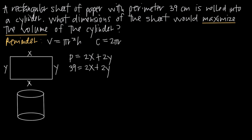If we roll this sheet into a cylinder — taking this edge y and folding it over until it meets the other edge y — we get a vertical cylinder. This means y is the height of the cylinder, so h = y. The distance x is what gets rolled around on itself, so x ends up being the circumference of the cylinder — the distance all the way around.